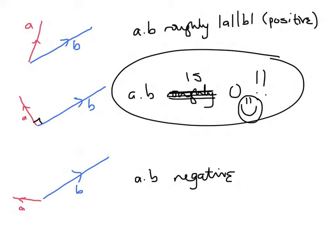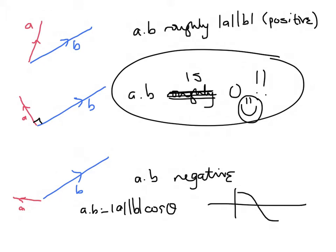Another way to think about the dot product is the extent to which a and b are going in the same direction. We can see this by looking at the graph of cosine: |a| |b| cosine theta equals a dot b. If we have a small theta, cosine will be nearly one, so a dot b will be roughly |a| |b|. When theta reaches 90 degrees, cosine theta is zero, so a dot b will be zero. As the angle grows larger, cos theta goes negative, so all those dot products will be negative.